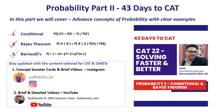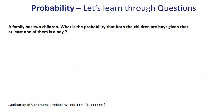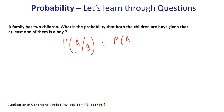Let's understand the concepts through questions. Starting with the first question: a family has two children. What is the probability that both the children are boys given that at least one of them is a boy? So let's understand how we solve a question like this. First, let's understand conditional probability. Probability of A when B is given is: P(A|B) = P(A∩B) / P(B).